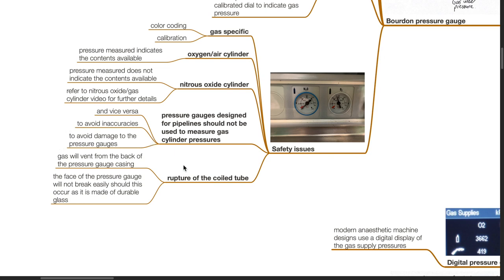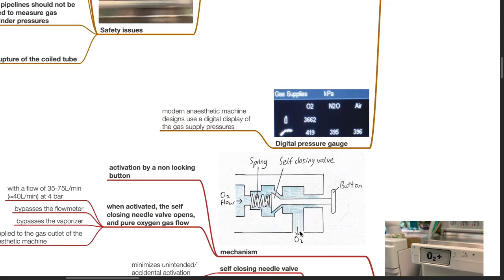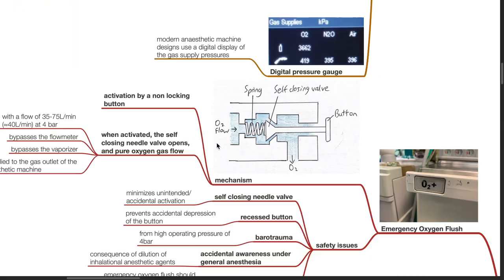Rupture of the coil tube may occur. Gas will vent from the back of the pressure gauge casing. The face of the pressure gauge will not break easily should this occur as it is made of durable glass. Digital pressure gauge: modern anesthetic machine designs use a digital display of the gas supply pressures.